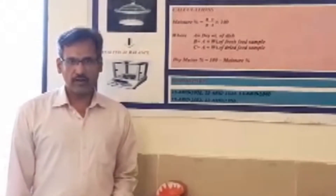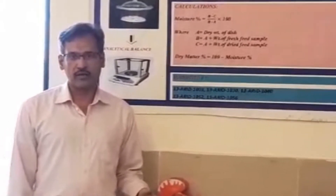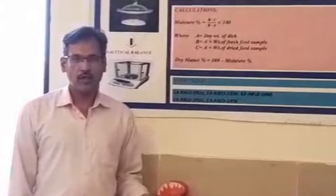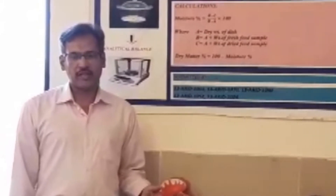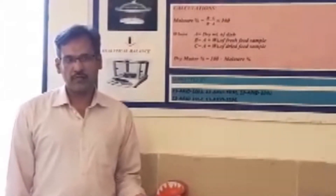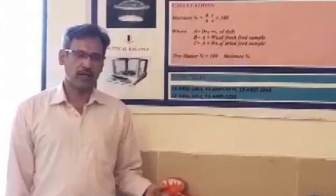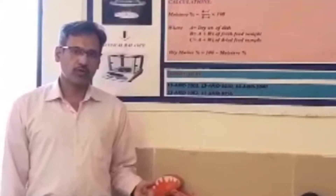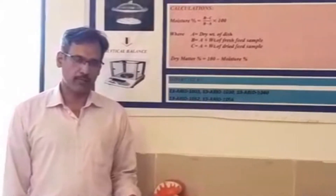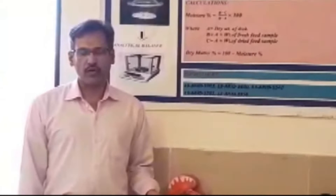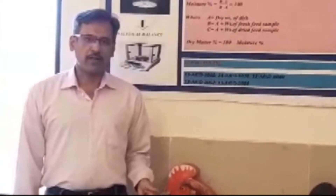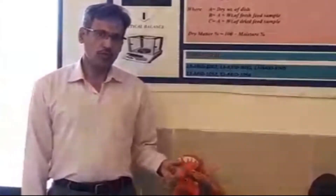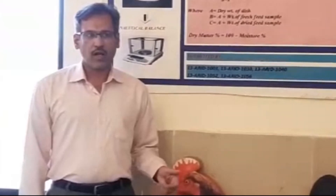Dry matter refers to the contents that remain when we dry a sample in an oven. The reason we use dry matter values is that the nutrient composition of all feedstuffs is reflected in books and nutrient requirement tables on a dry matter basis. If we know the dry matter content of a feedstuff, it becomes easy to calculate how much dry matter an animal is consuming.